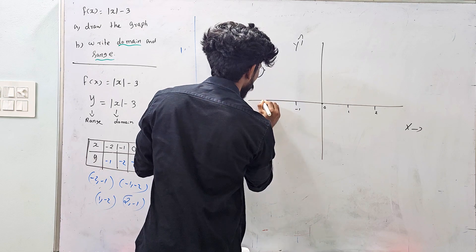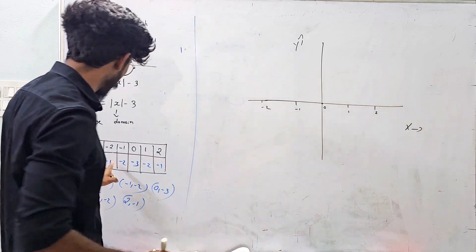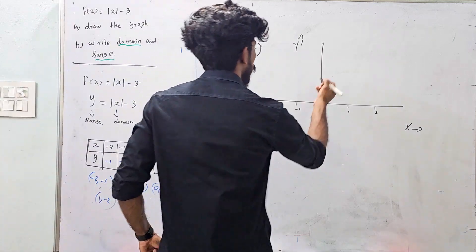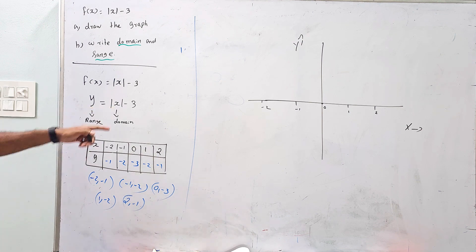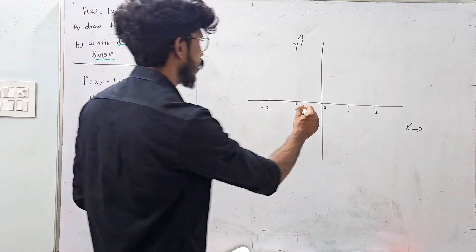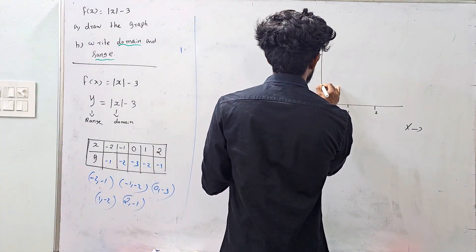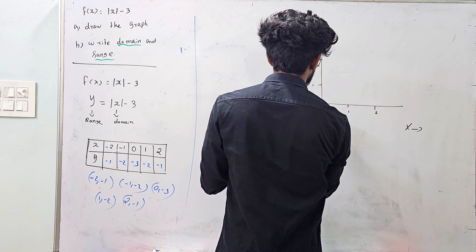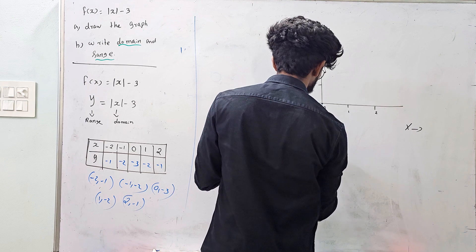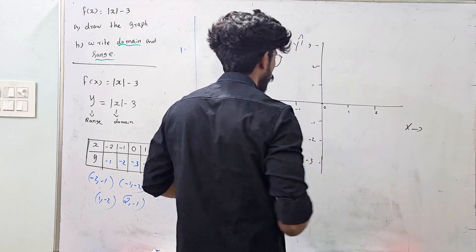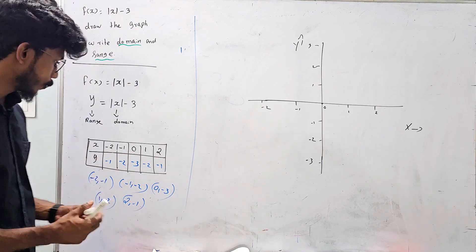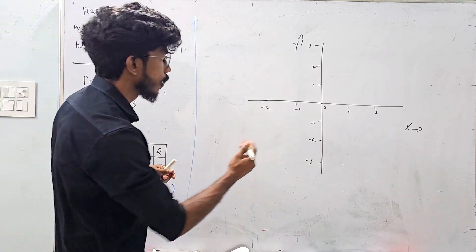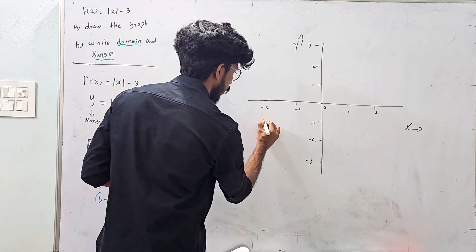On the y-axis: minus 1, minus 2, minus 3. If y is not negative it will be positive; if x is positive it will be positive. Now plotting the points: x = -2, y = -1. Mark this point.